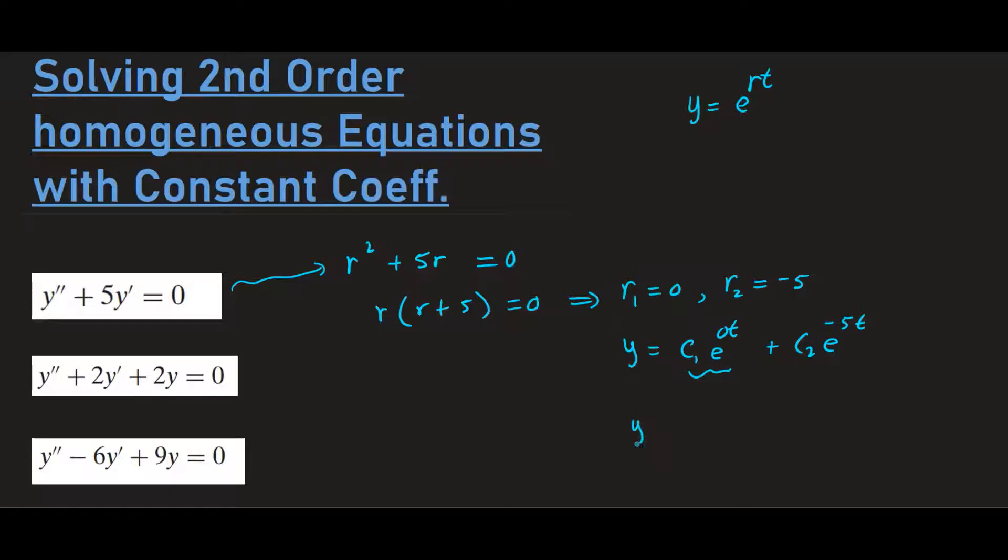So hence we can say this is y equals c1 because e to the zero t is just 1 plus c2 e to the negative five t. So that's how the solution would look like if the roots of the characteristic polynomial are real and distinct.